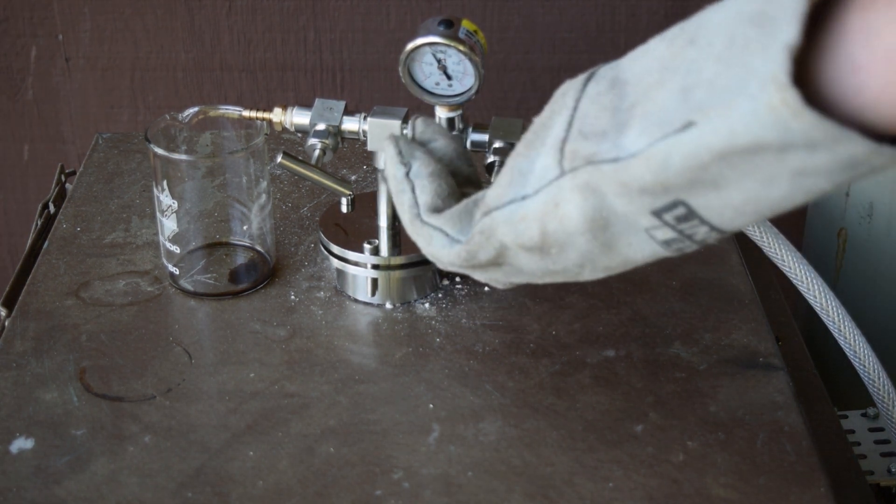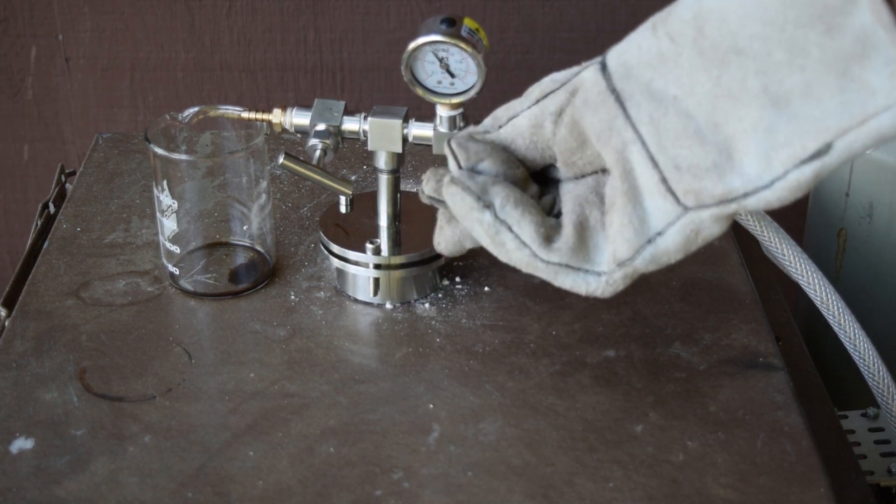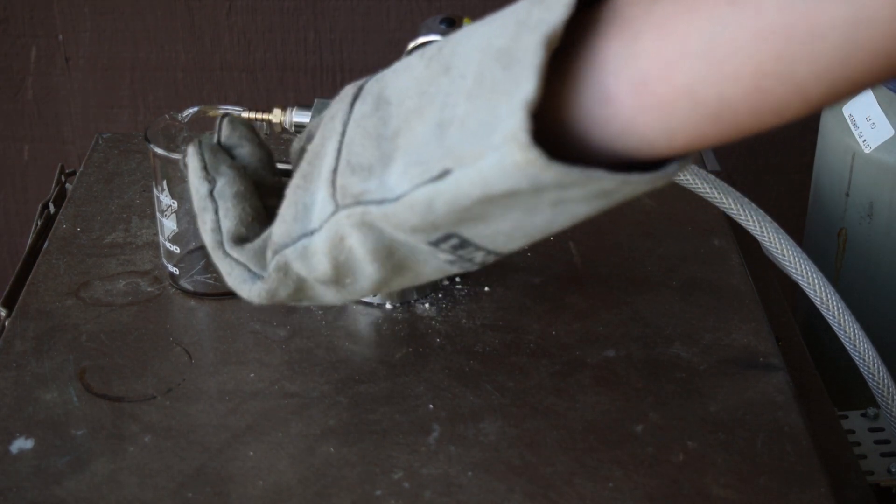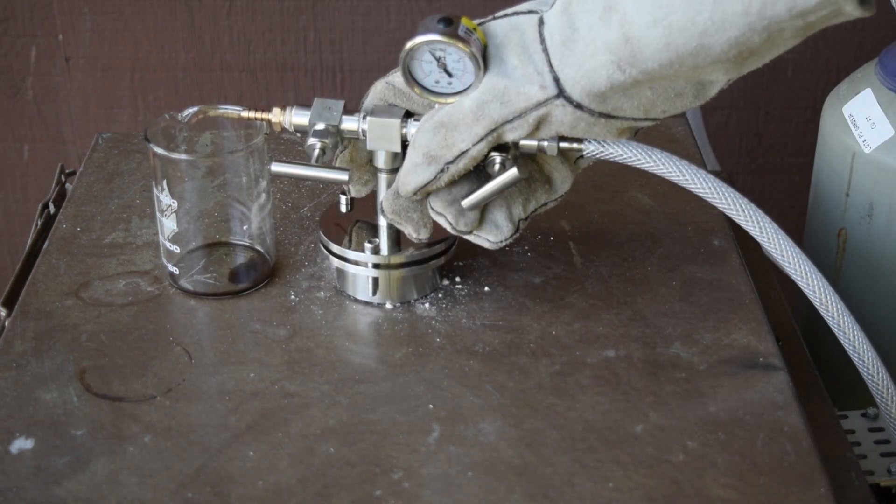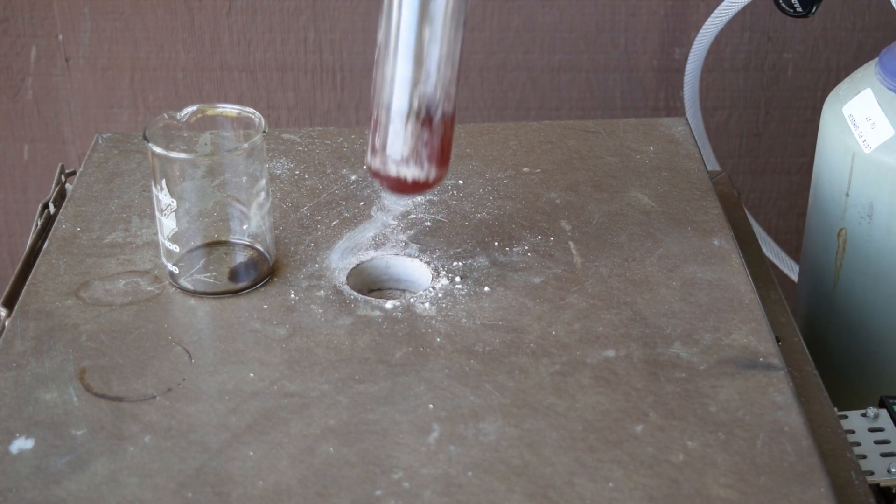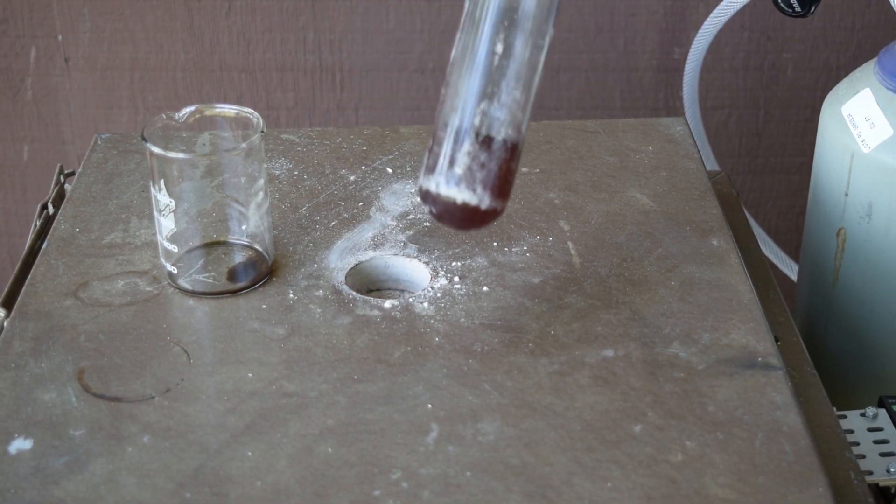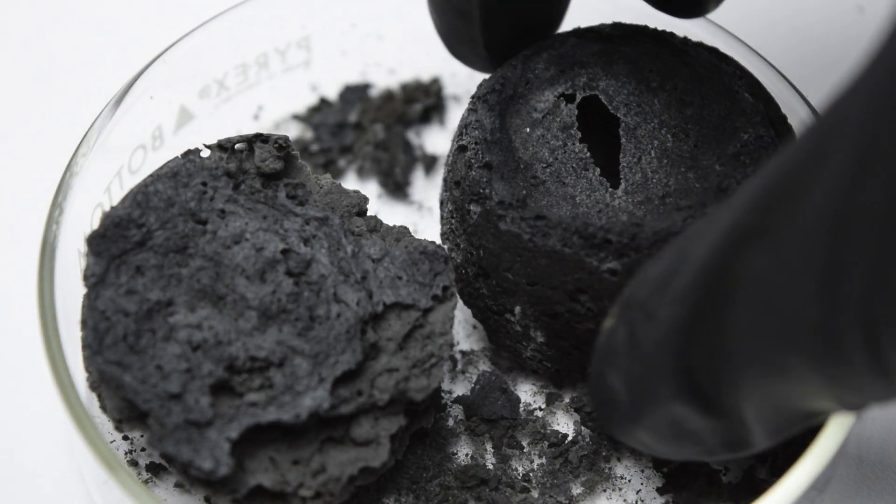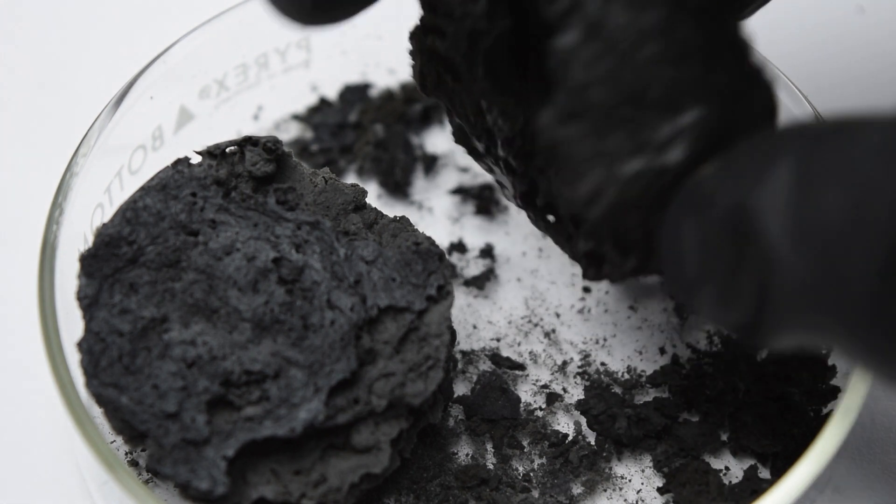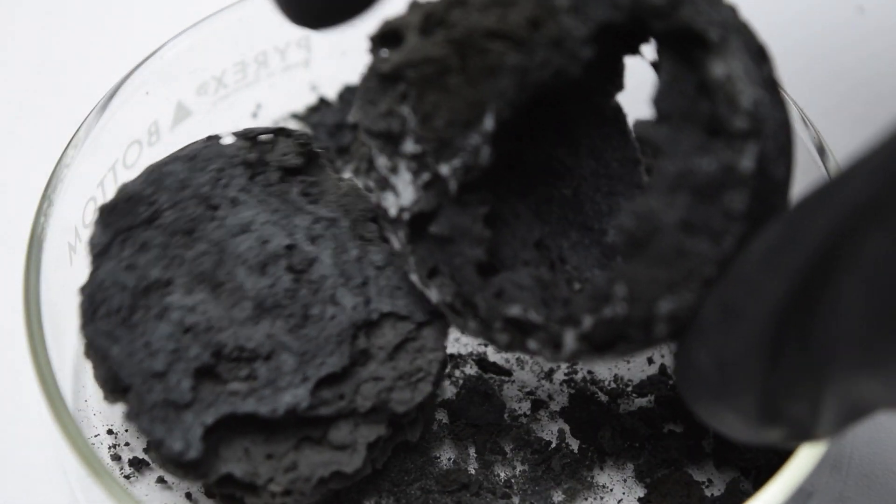After one hour, the argon flow is stopped and the chamber is removed from the kiln. The final carbon is clumped into large pieces, which will need to be washed with 10% hydrochloric acid and deionized water.